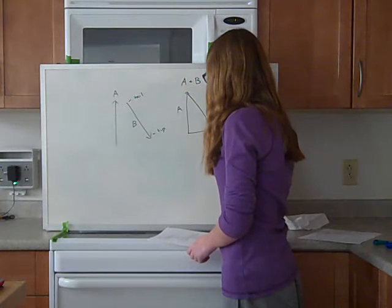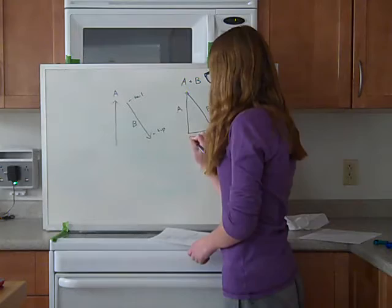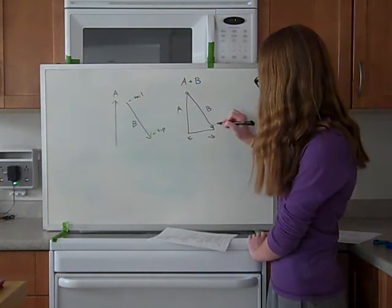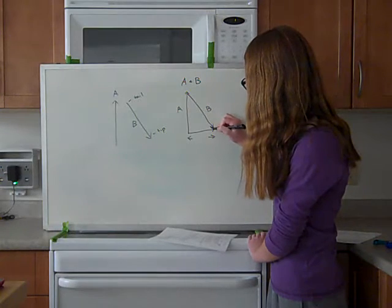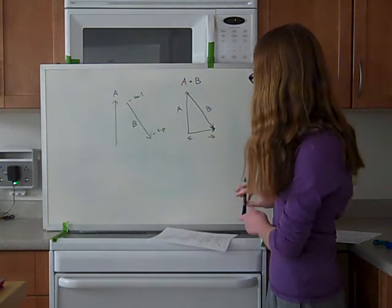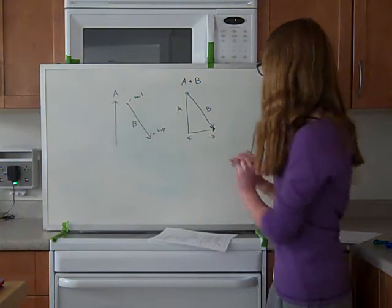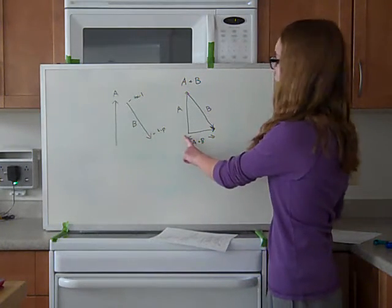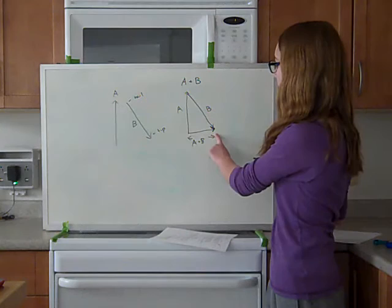But, does the line go this way or this way? Well, in this case, we know that the line is going to go this way because the line that you draw, which is A plus B, so we're just going to write that in, is always going to go from the tail of A to the tip of B.